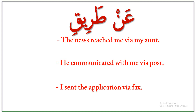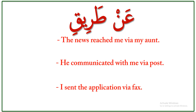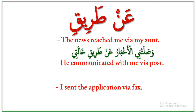Let's see the following examples. Please look at the first sentence: 'The news reached me via my aunt.' How to say this sentence in Arabic? We say: وصلتني الأخبار عن طريق خالتي. وصلتني means 'reached me', الأخبار means 'the news', عن طريق means 'via', خالتي means 'my aunt'.